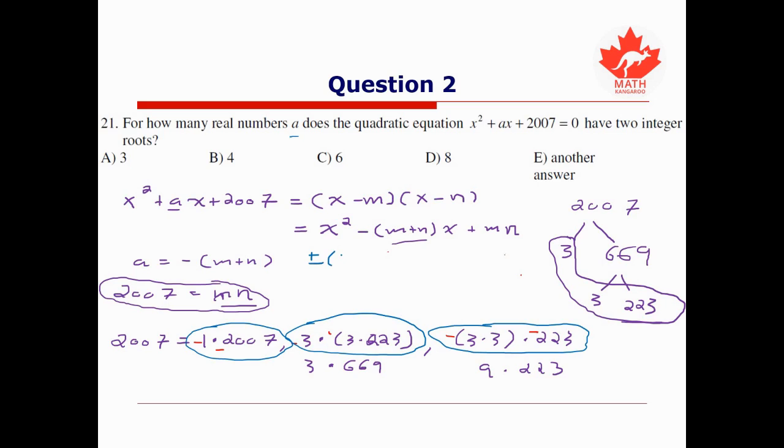We have either the positive or negative of 1 + 2007, so that is ±2008. We have ±(3 + 669), which is ±672. And we have ±(9 + 223), which is ±232. So in total we have 2, 4, 6 distinct solutions for a, and thus our answer is C.